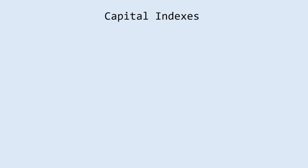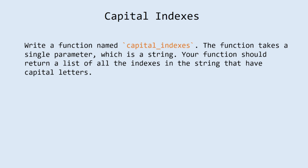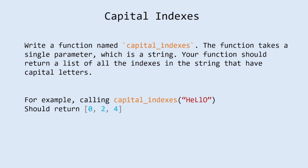Capital indexes. Explanation: write a function named capital_indexes. The function takes a single parameter, which is a string. Your function should return a list of all the indexes in the string that have capital letters. For example, calling capital_indexes with the string 'Hello' should return the list with zero, two and four indexes.